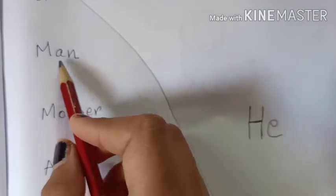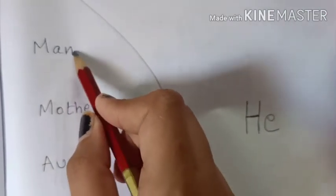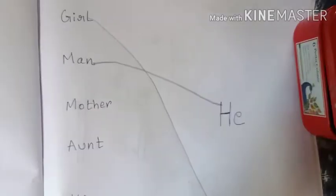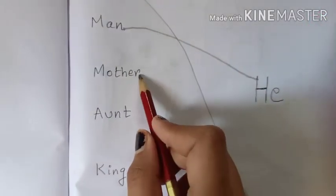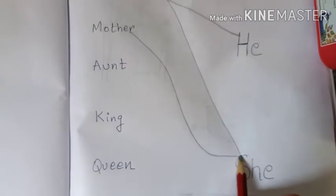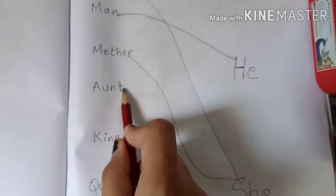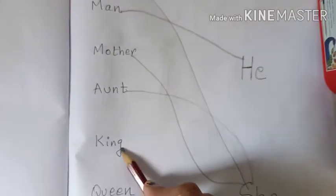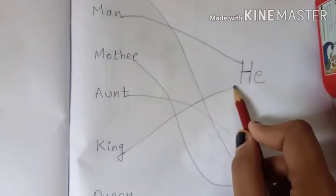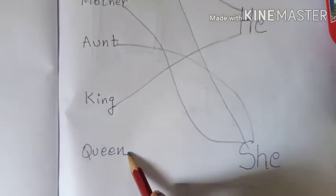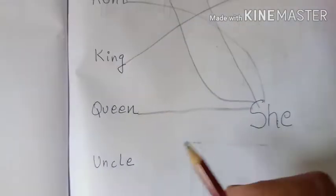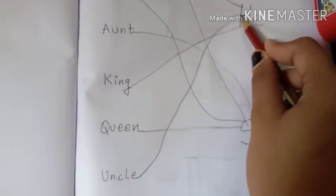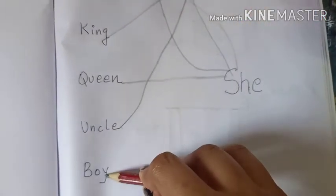Man — we use 'he', so man goes to 'he'. Mother — we use 'she'. For aunt — 'she'. For king — 'he'. For queen — 'she'. For uncle — 'he'. For boy — 'he'.